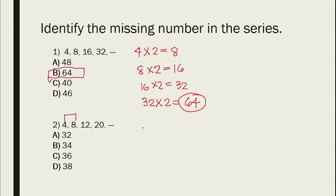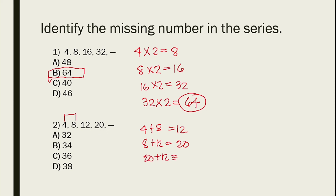So we have 4 plus 8 that is equal to 12. And we have 8 plus 12 that is equal to 20. So therefore, we have 20 plus 12 that is equal to 32. So the answer is 32.